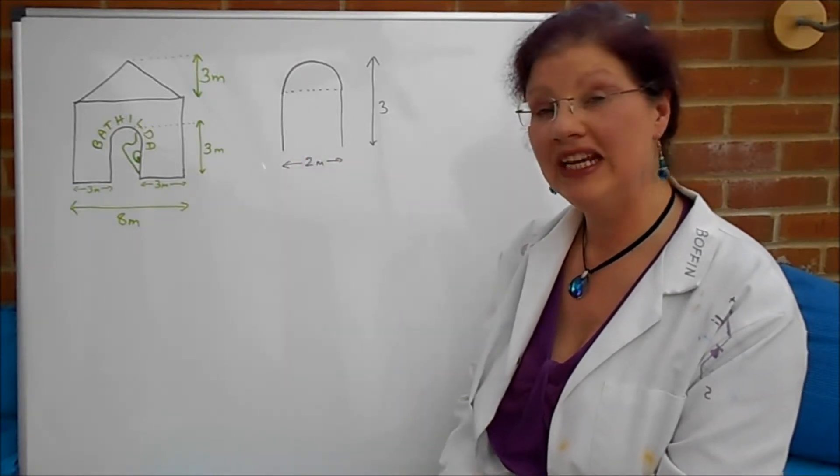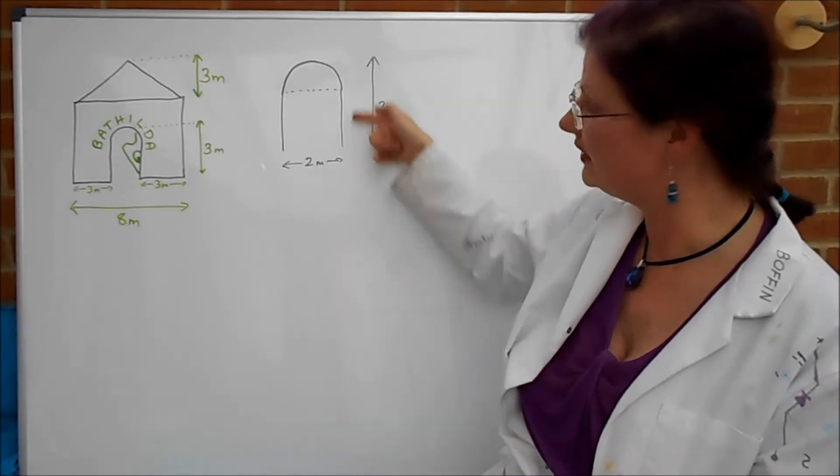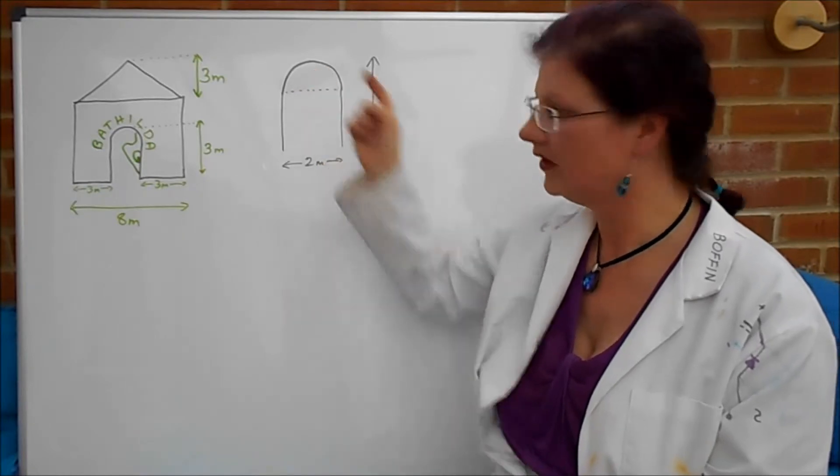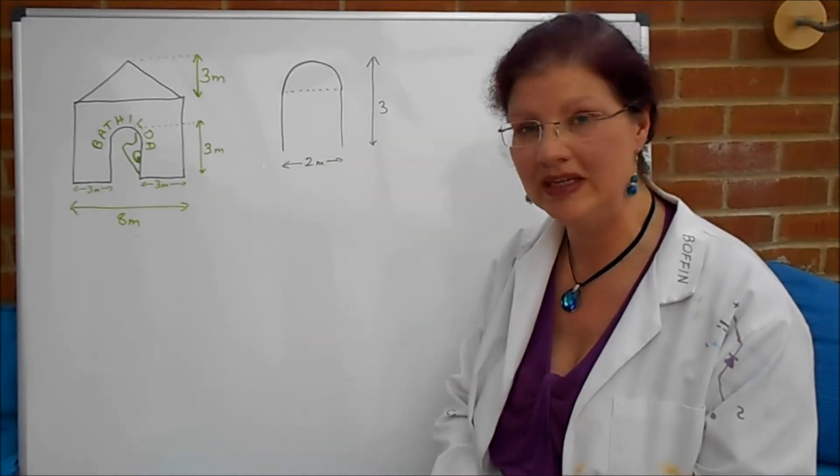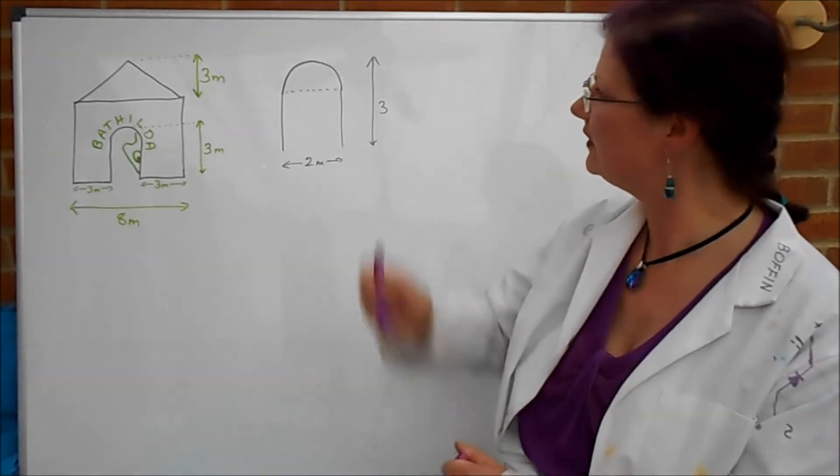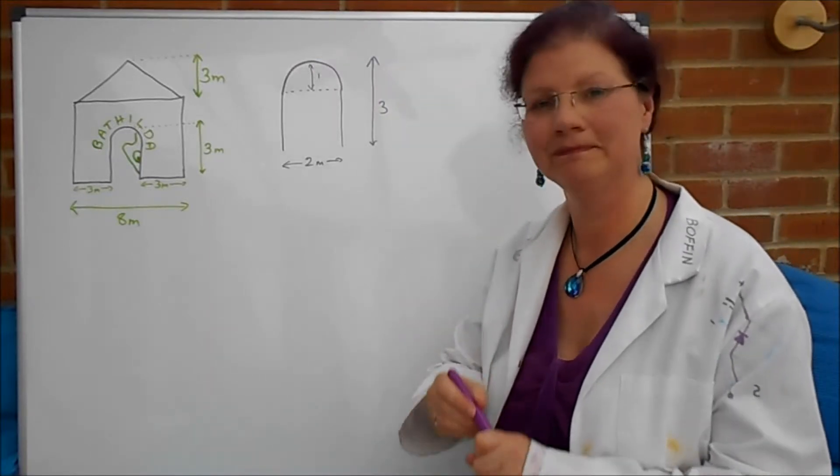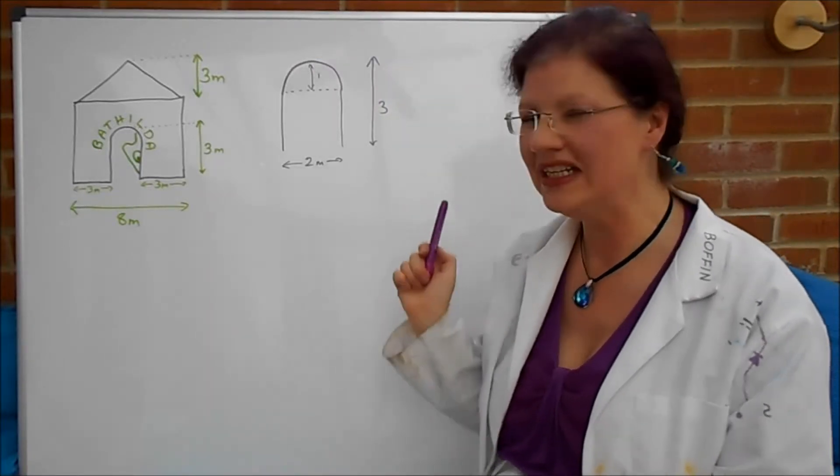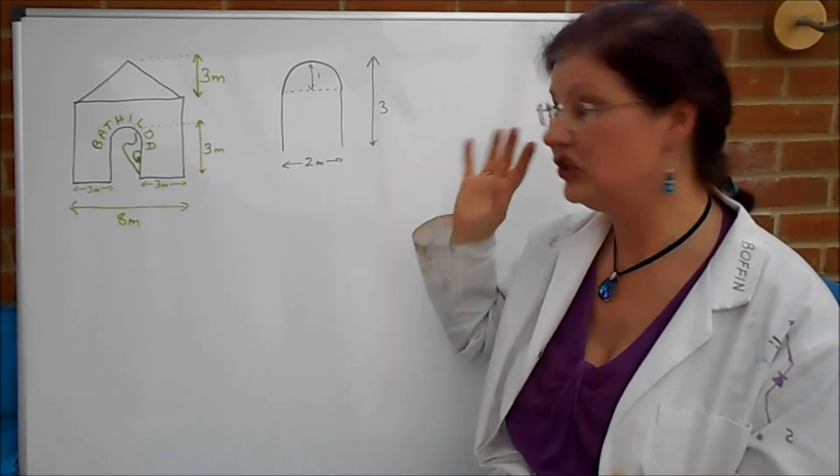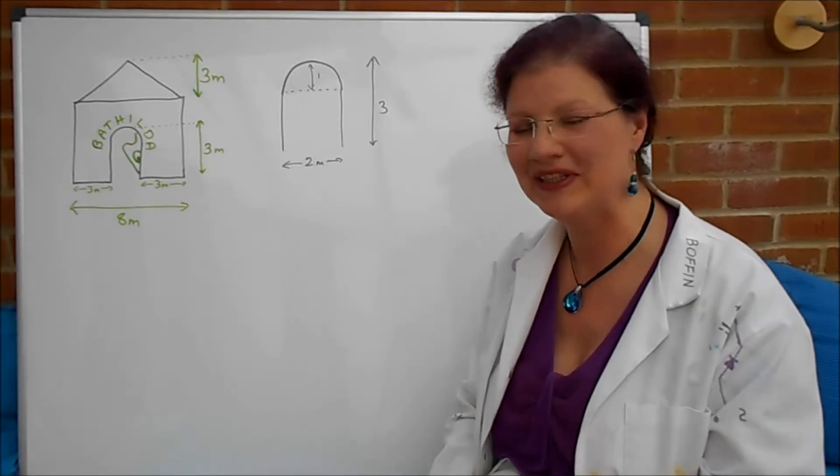Now we need to look at the circle at the top because what we need to know is to know the height of these straight bits. If the diameter of this semicircle up there is two meters then we know its radius is one meter which means that this dimension here is one. Now if you didn't get any of that you'll have found the rest of it hard so what I'm going to do is pause the video again and just in case you got stuck at this bit you can carry on from here.